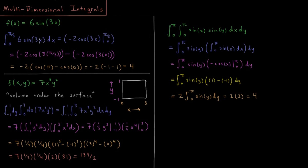Solving this integral, we find it gives us −2·cos(3x), because if we take the chain rule on this we get back the original function. We'll take the value of this function at π/3 and subtract its value at zero, giving us −2·cos(3·π/3) minus −2·cos(3·0). We can factor out the −2 that appears in both terms.